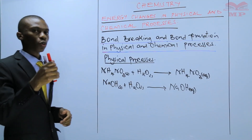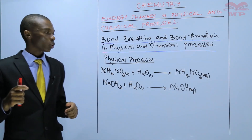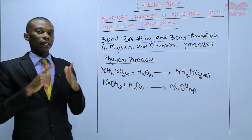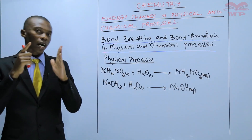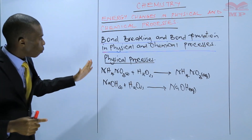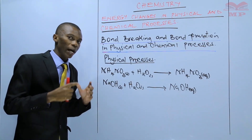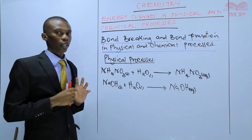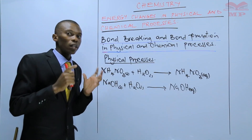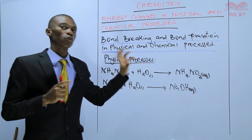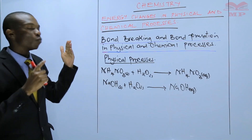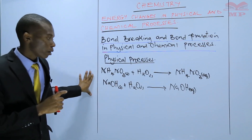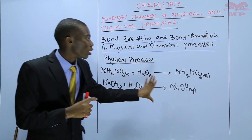You remember in Form 2, we talked about the five types of chemical bonds, which were ionic bonds, covalent bonds, metallic bonds, dative or coordinate bonds, and hydrogen bonds. Ammonium nitrate and sodium hydroxide are held together by ionic bonds. If you place these solids in water, they are going to dissolve, leading to formation of solutions. This means that you've broken the ionic bonds which were existing in ammonium nitrate solid and sodium hydroxide solid, so that you can form their solutions.